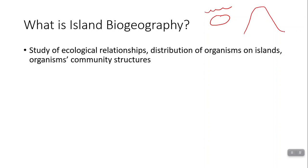For example, mountaintops — where you have a community that's developed on top of a mountain — are considered islands in this case. Why? Because they're isolated from the surrounding area. Why don't organisms just move down the mountain? Well, they'll encounter different abiotic conditions, different temperatures, different moistures, so the organisms living on these mountaintops are isolated there.